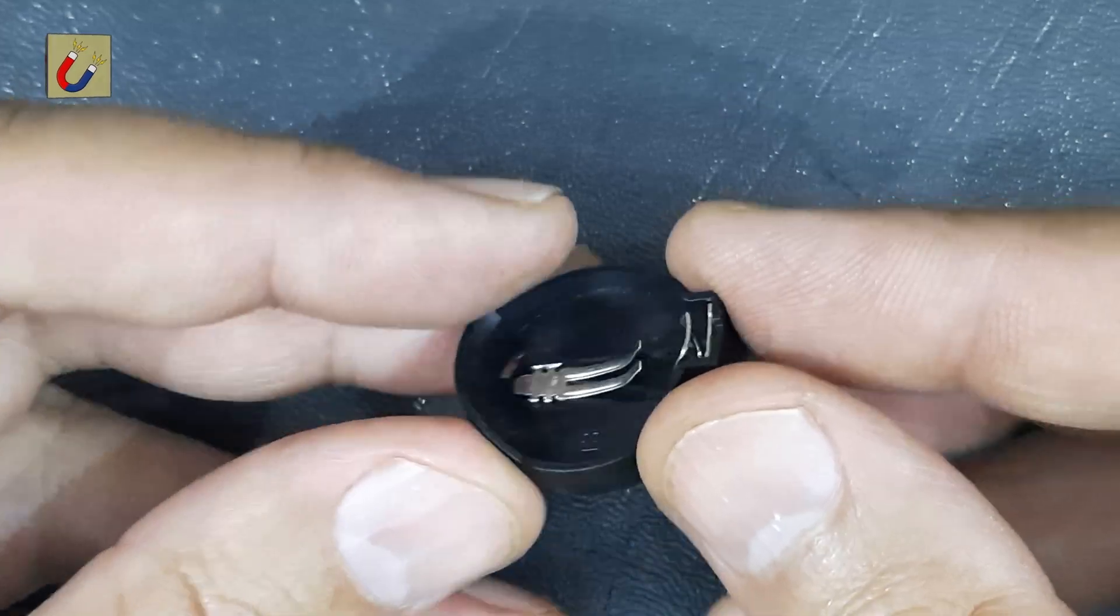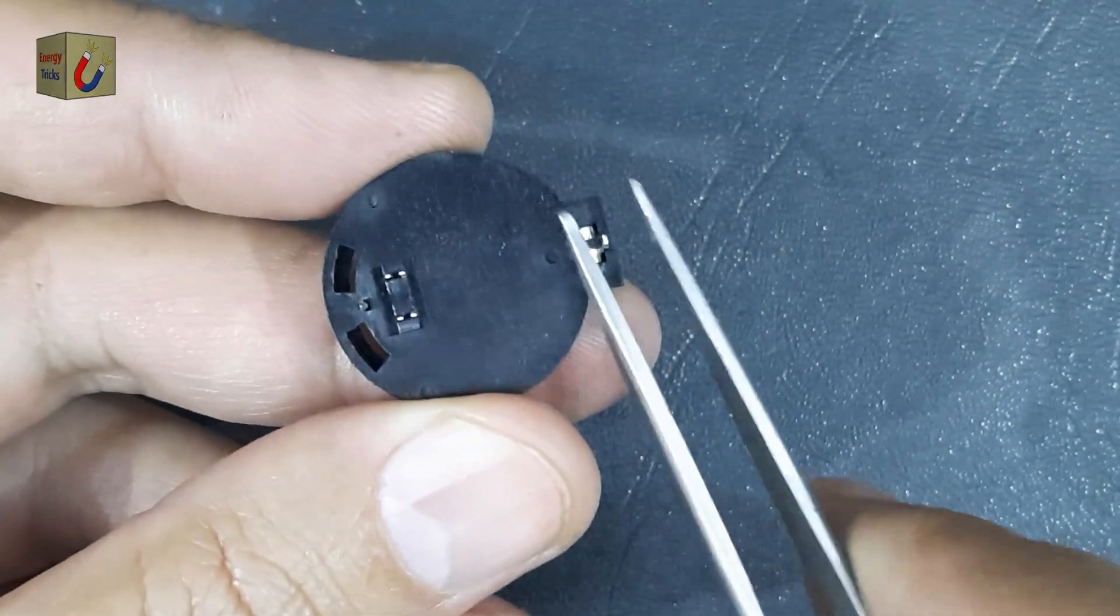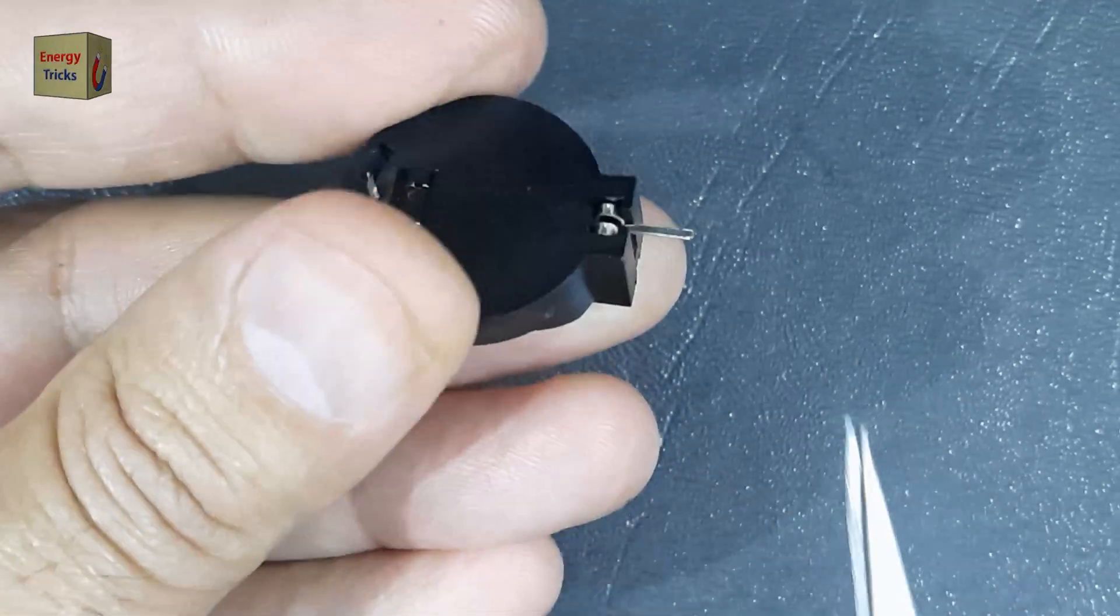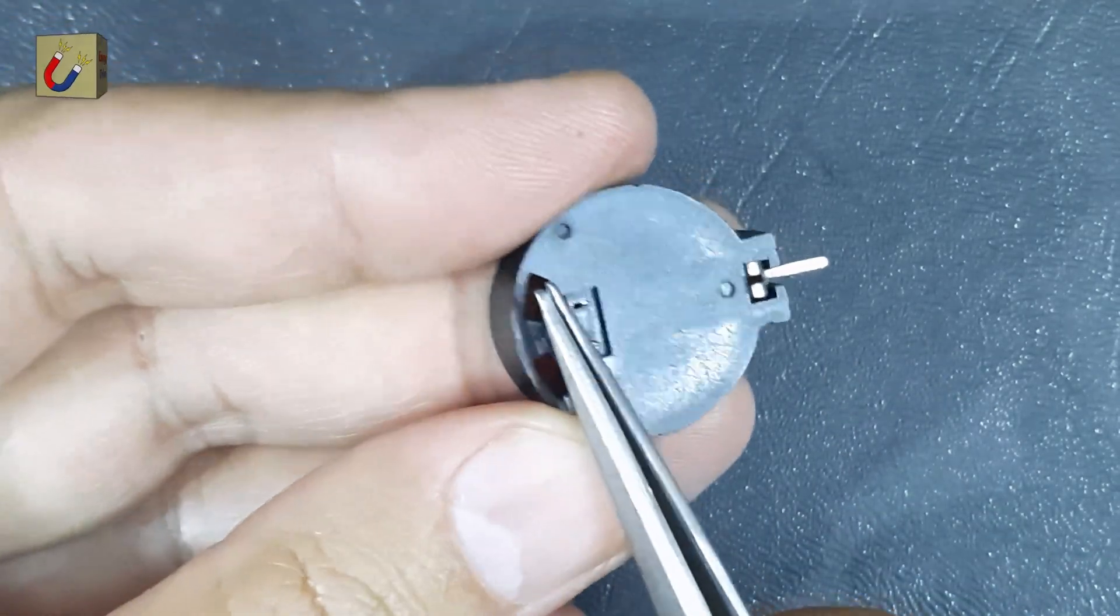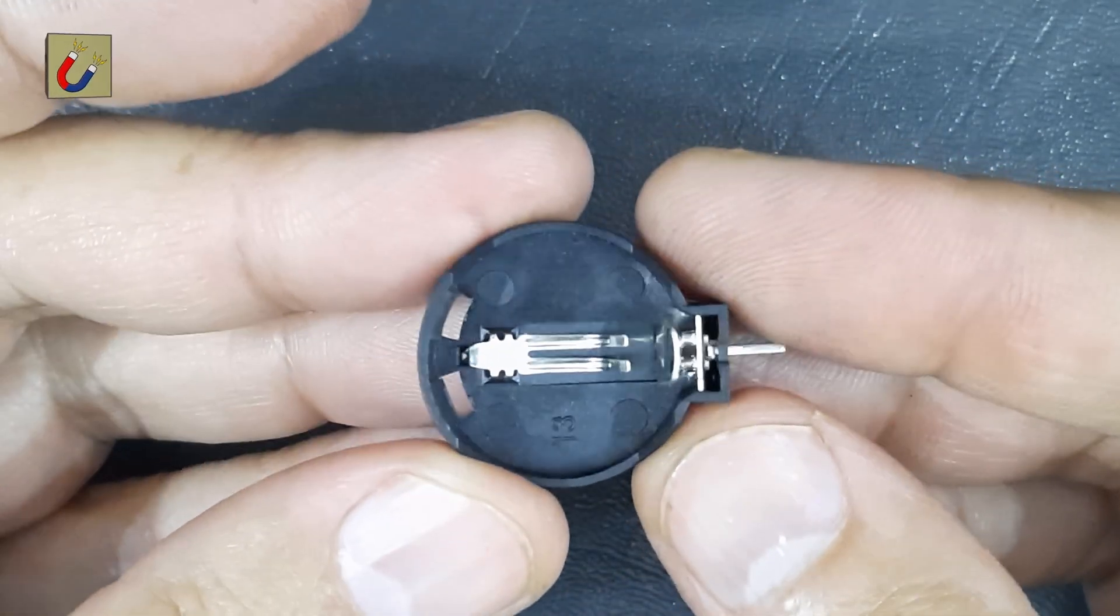To begin making this emergency torch, you will need a coin battery holder. The holder has straight positive and negative pins, which need to be adjusted for this project. Carefully bend these pins into a 90 degree position to make them more accessible and better suited for connecting the other components.